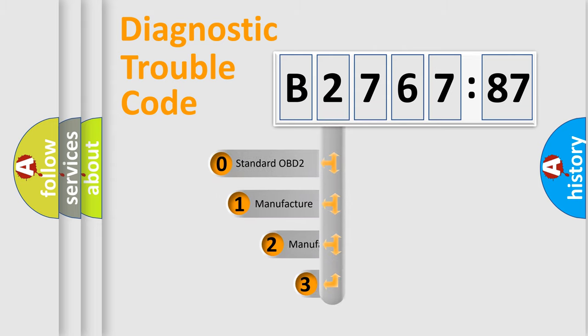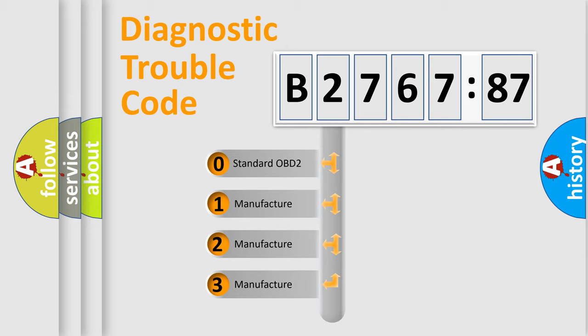Powertrain, body, chassis, network. This distribution is defined in the first character code.